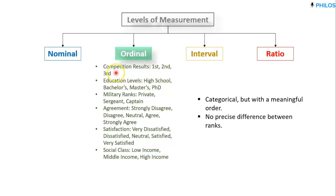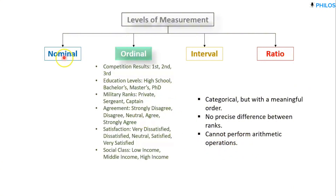But the second position had 90 and the third position had 75, so the difference between second and third is 15 points. The difference between first and second is not the same as the difference between second and third — that's what we mean by no precise difference between the ranks. Also, just like nominal, you cannot perform arithmetic operations such as addition, subtraction, multiplication, or division for ordinal data, and therefore you cannot calculate the mean. The best measure for ordinal level data is the median, though you can also find the mode.